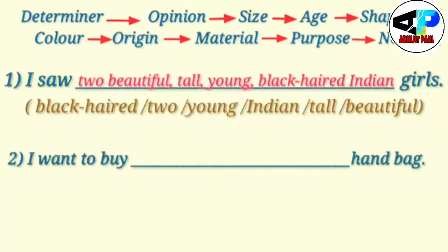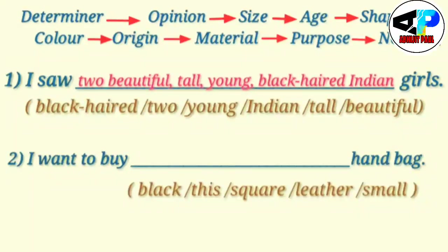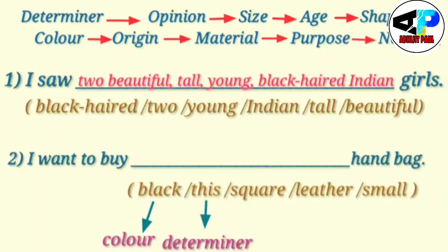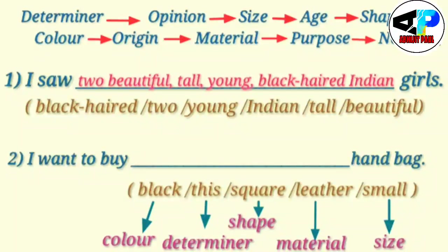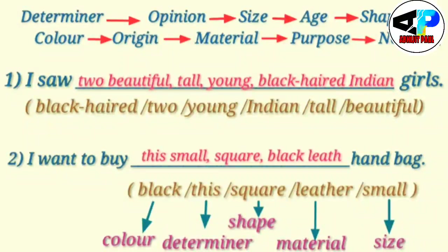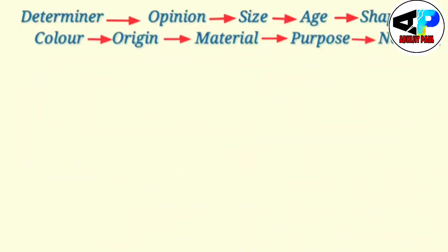Let us take another example. 'I want to buy ___ handbag.' The adjectives are black, this, square, leather, and small. Black is color, this is a determiner, square is shape, leather is material, and small is size. So the order is: determiner (this), size (small), shape (square), color (black), material (leather). The correct sentence is: 'I want to buy this small square black leather handbag.'